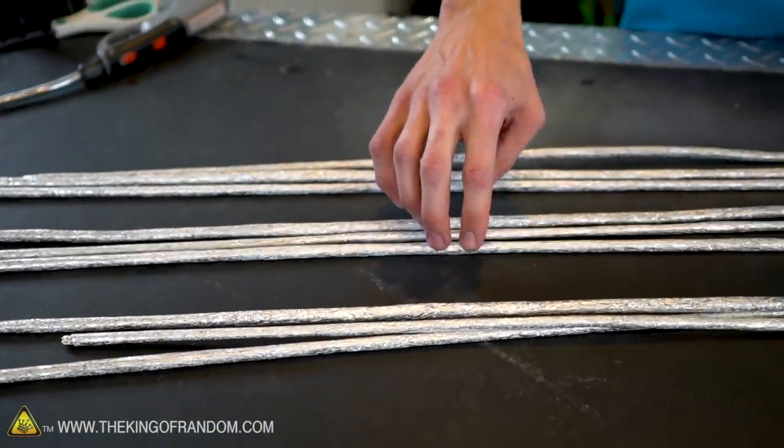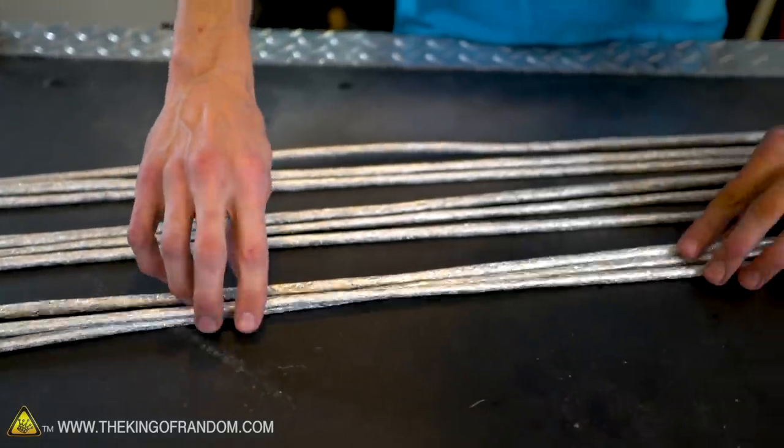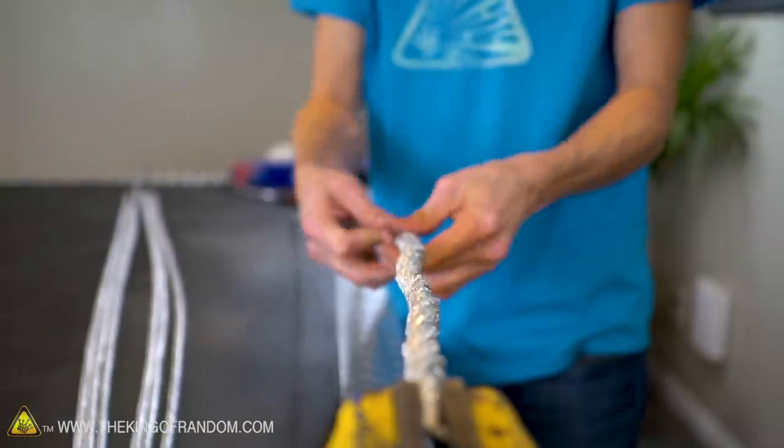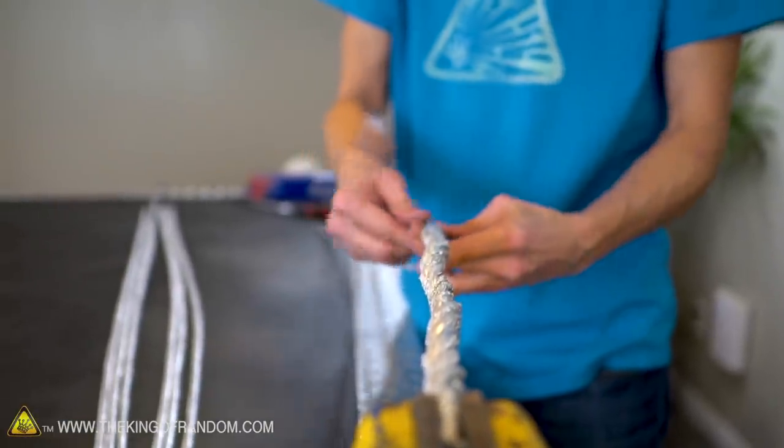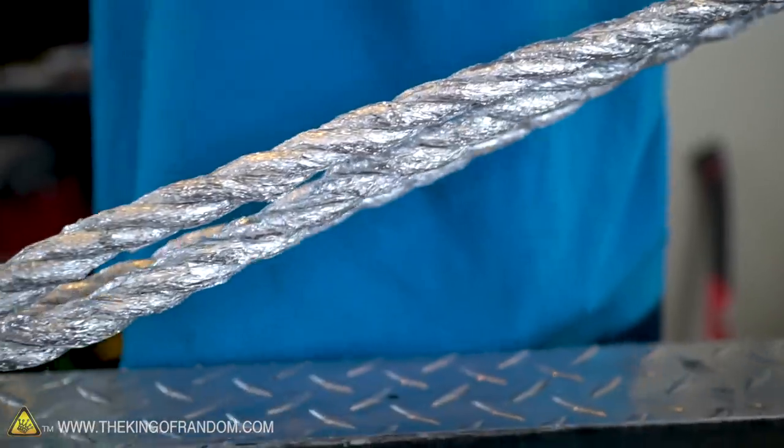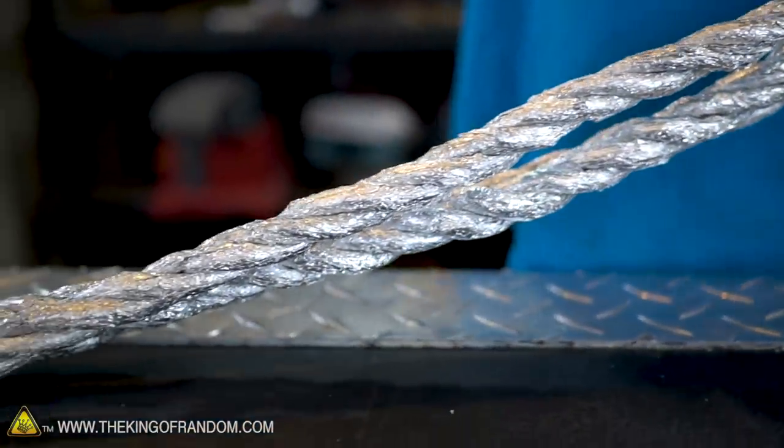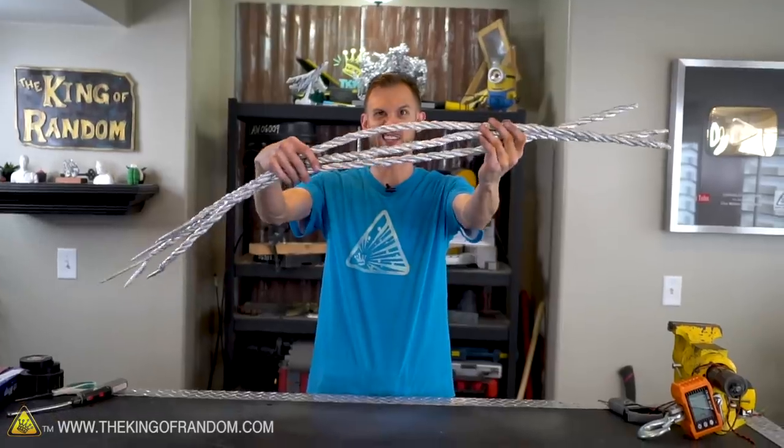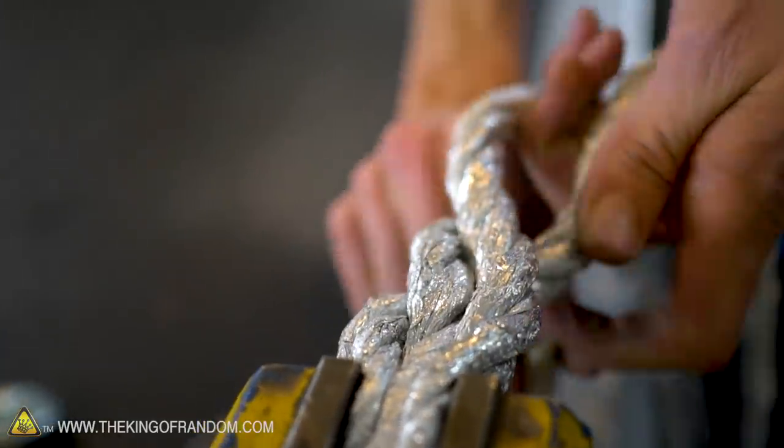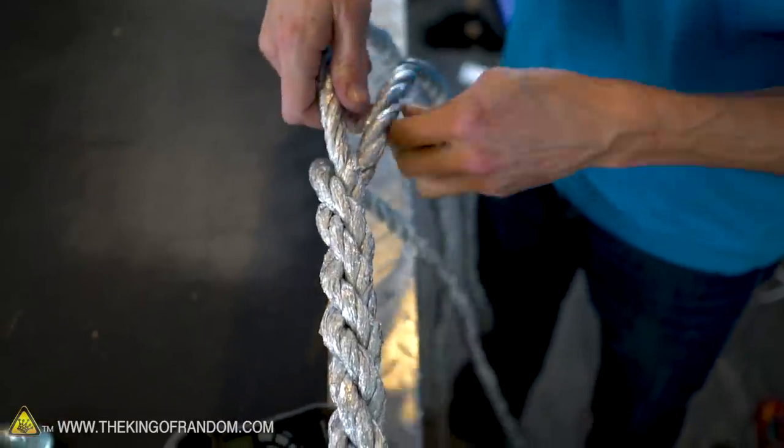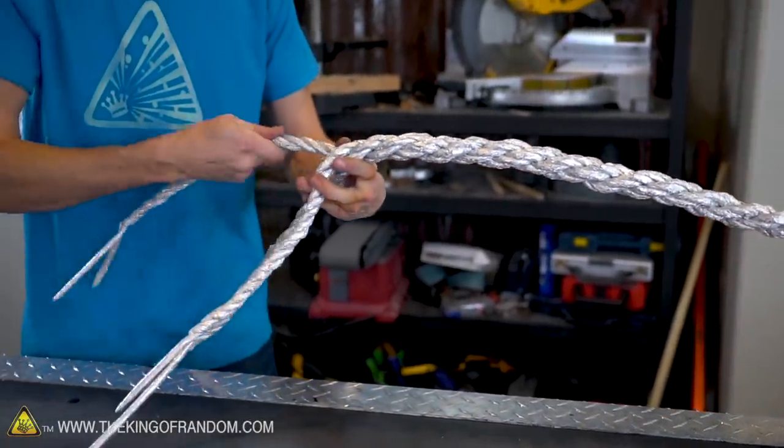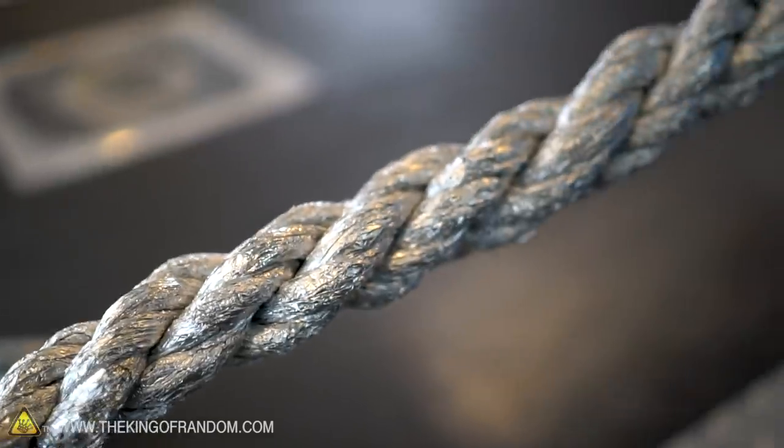We've got nine cords laid out now, so we're going to start twisting them together. We're going to twist three together, three together, three together, and then we're going to twist all of those together and make ourselves a big monster cable, see how it works. Now we've got three cables, and we need to twist them all together into one giant cable. Yeah, let's turn it into one big ol' rope. All right.